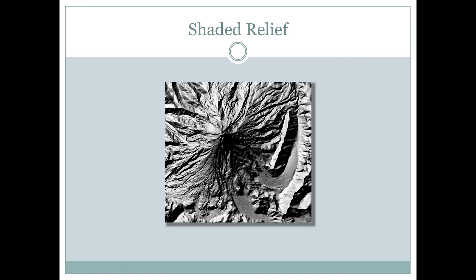Hill shading provides maps like this where we see the terrain in three dimensions. The light source is again coming in from the northwest, so areas on one side of the volcano are darker, areas on the other side are lighter, and we can see the same patterns with these ridges over here.